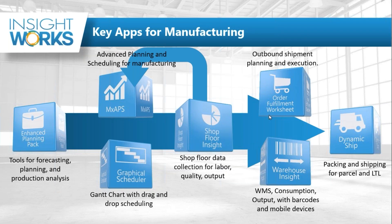Once production is completed, it goes to our order fulfillment worksheet to figure out what we can ship today, then either WMS Express or Warehouse Insight to scan barcodes, and then Dynamic Ship for LTL and international shipments. If all you care about is consumption and output and you're not tracking labor time or activities, Warehouse Insight might be the better choice for your shop floor — it runs on a tablet and is a very good tool for managing material.